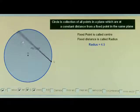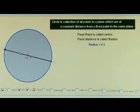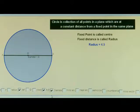When the chord passes through the center, its length is maximum, and this is known as the diameter of the circle. The diameter of the circle is the chord which passes through the center of the circle. The diameter divides the circle into two equal parts.